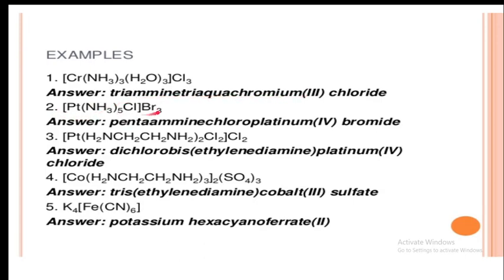Example 2: Pt(NH3)5ClBr3. There are two ligands: amine (NH3) and chloro (Cl). In alphabetical order, amine comes before chloro. The name is pentaaminechloridoplatinum with the oxidation state in Roman numerals. Outside the bracket, bromide (Br⁻) is the anion, so the full name includes bromide.